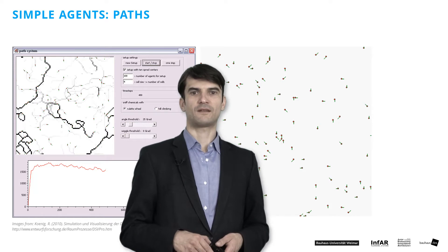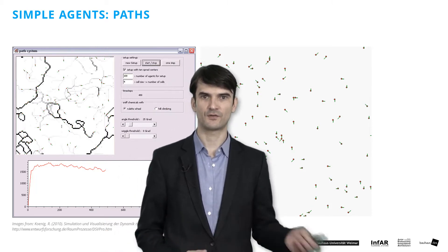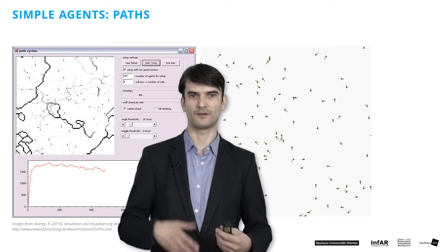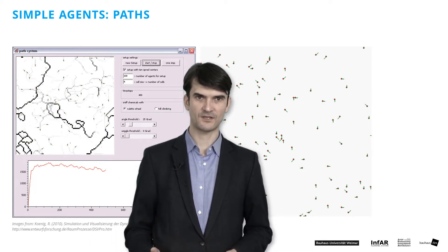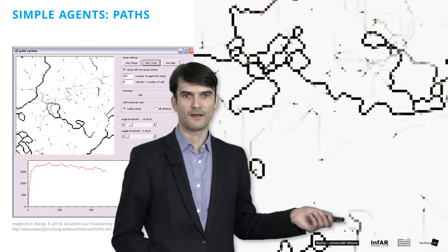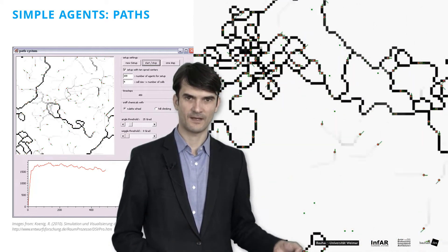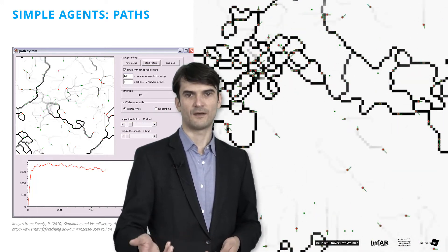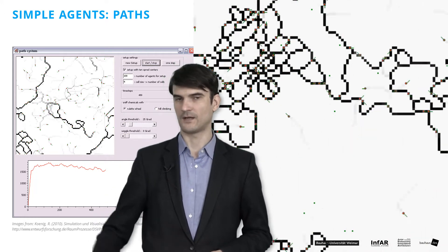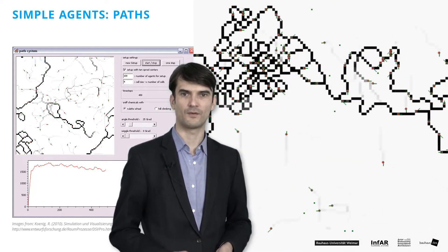Another system with a pattern that emerged from self-organization is the formation of paths. Animals or humans prefer to use tracks that are made by others. If it's not too big a detour they will use the track that was laid by someone else. Such a system can be simulated by agents in a cell space using NetLogo, for example, where the cells store the information that an agent walked across it. The next agent sees this information and follows the track with a certain probability, going from one marked cell to the other instead of selecting a route through an empty area. The pattern looks similar to paths on a square with fresh snow.